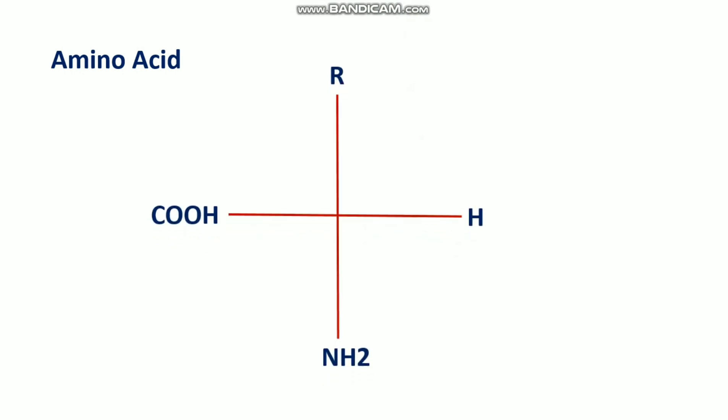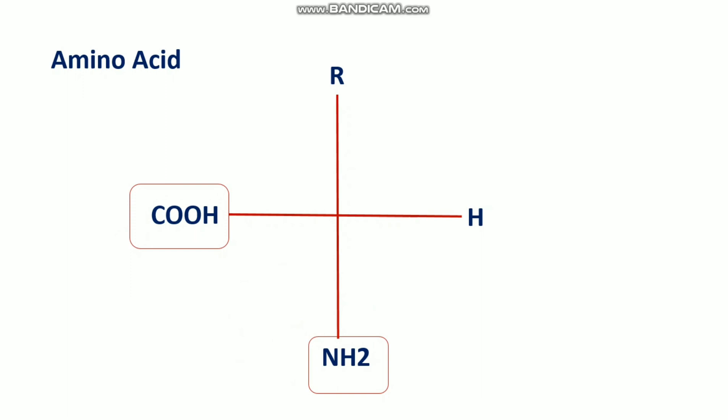First we need to know what an amino acid is. Amino acid is basically the structural unit of the protein. Protein is composed of amino acids. This is the structure of the amino acid — here is the carboxyl group and one amino group, and there is the R group, that is the side chain. This kind of amino acid links with another amino acid to form the peptide by the peptide bond.